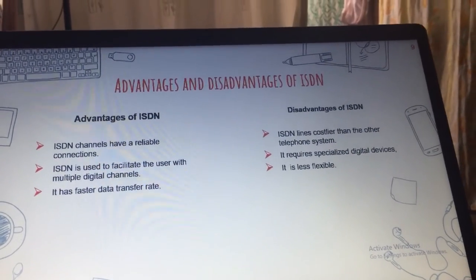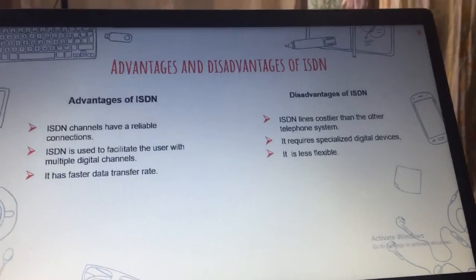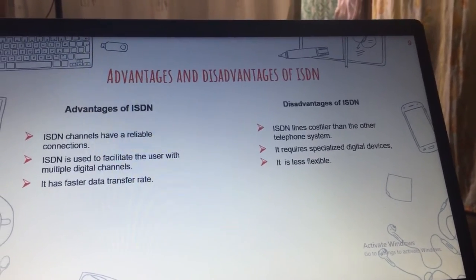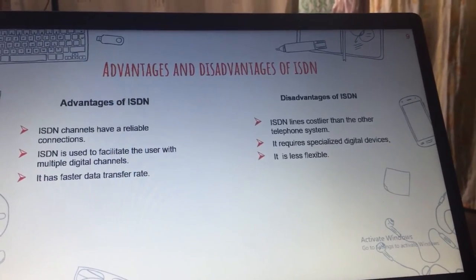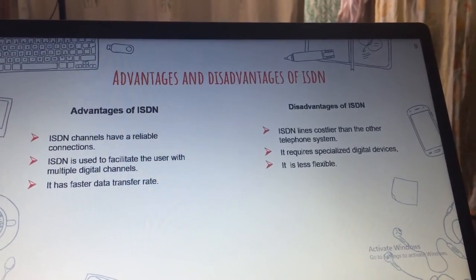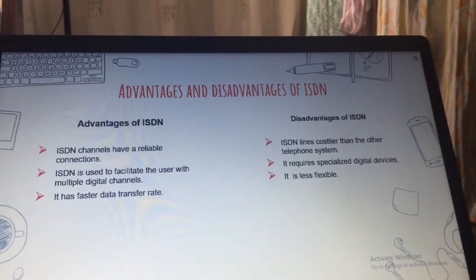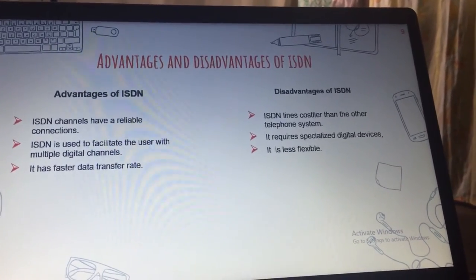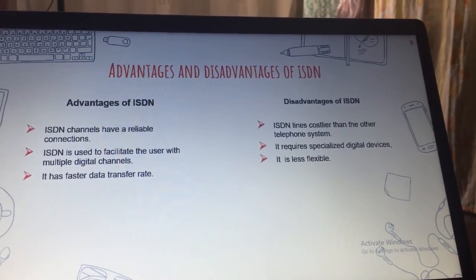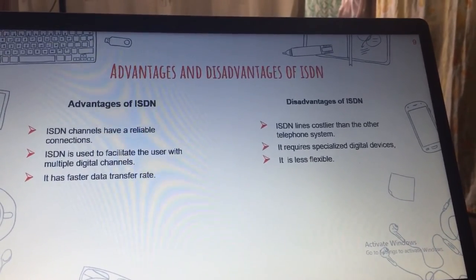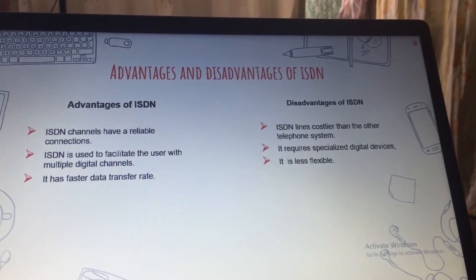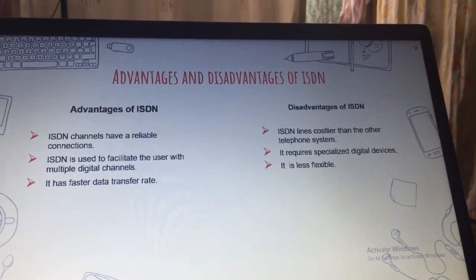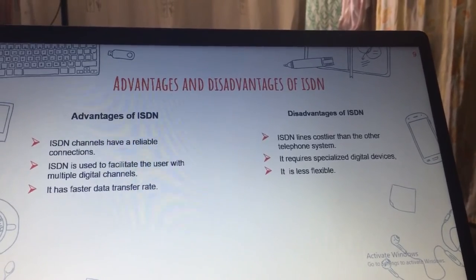The advantages and disadvantages of ISDN: The advantages are that ISDN channels have reliable connections, ISDN facilitates the user with multiple digital channels, and it has a faster data transfer rate. The disadvantages are that ISDN lines can be costlier than other telephone systems, it requires specialized digital devices, and it is least flexible.